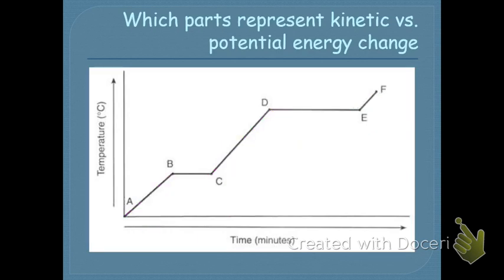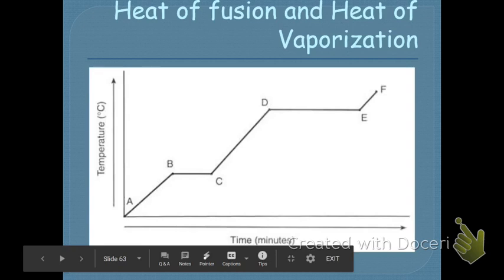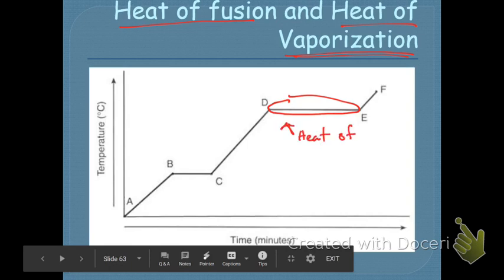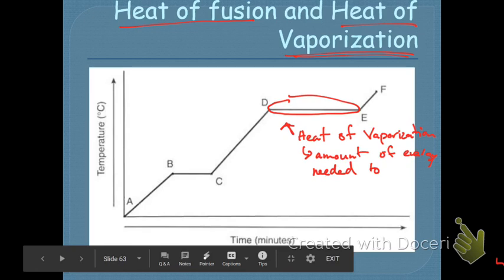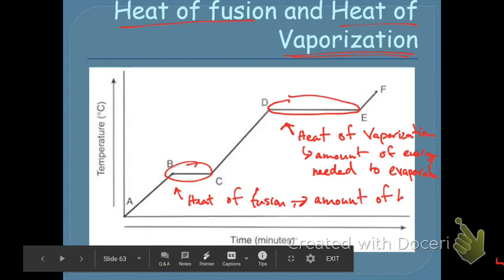There are two topics: heat of fusion and heat of vaporization. Heat of vaporization — or evaporation — is the amount of energy needed to vaporize or evaporate. Heat of fusion is the amount of energy needed to melt. You'll notice it takes less time to melt and more time to vaporize. Going from solid to liquid takes less time because you're only loosening the IMF — you're not getting rid of it, just loosening it so particles are no longer stuck together but free to move.